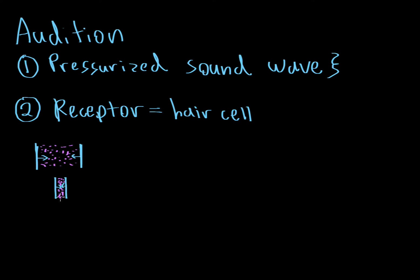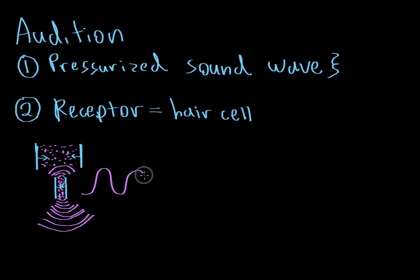This area of high pressure results in little pressure waves that move away from your hands in all directions. If you were to look at a graph of this, you'd see a pressure wave that is basically just an area of high and low pressure — up here you've got high pressure and down here you've got low pressure. So basically this clap resulted in this sound wave.